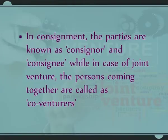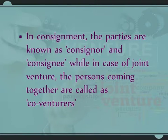The main points of difference between joint venture and consignment: Number 1: In consignment, the consignee gets commission for selling goods on behalf of the consigner. In joint venture, co-venturers get their share of profits. Number 2: In consignment, parties are called consigner and consignee; in joint venture, they are called co-venturers. Number 3: The relationship between consigner and consignee is that of a principal and agent. In joint venture, the co-venturers are partners.